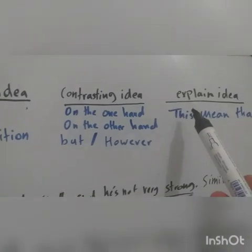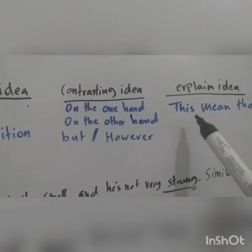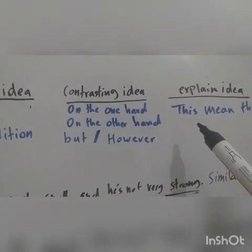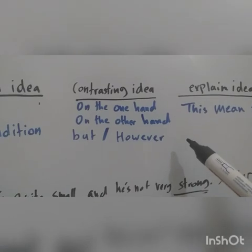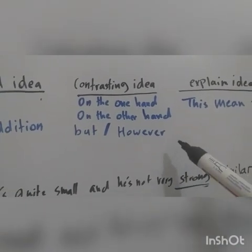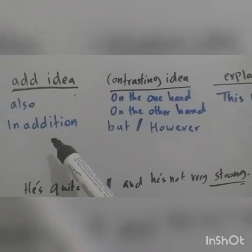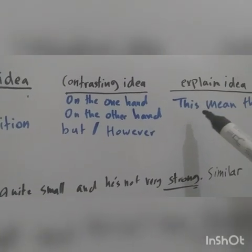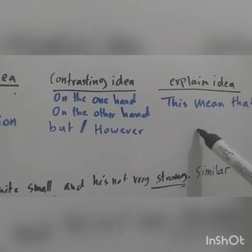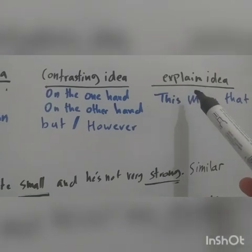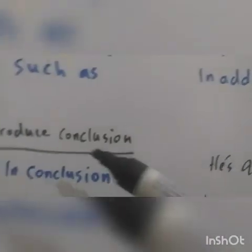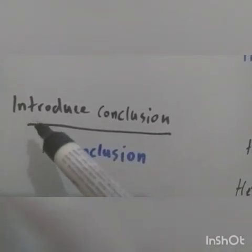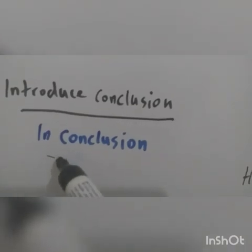You also have to explain your idea using the expression 'this means that.' For example: 'The internet is very bad for your health. For example, it could hurt your spine. In addition, it is harmful for your eyes. This means that you have to spend less time on it.' The last element is to introduce the conclusion using the expression 'in conclusion.'